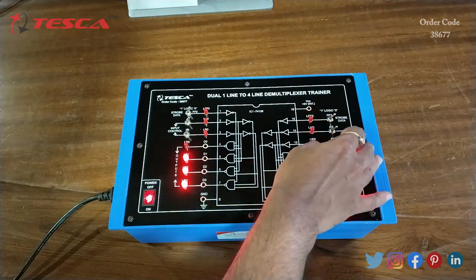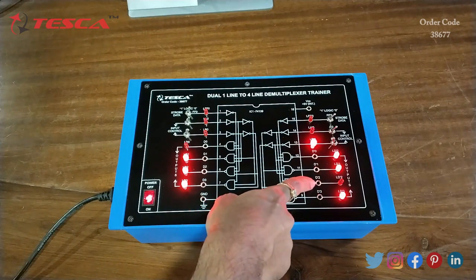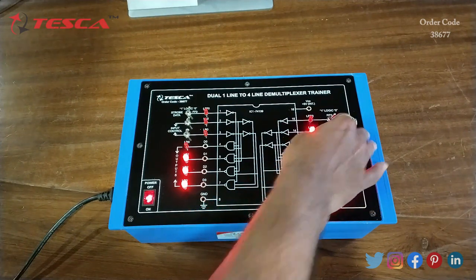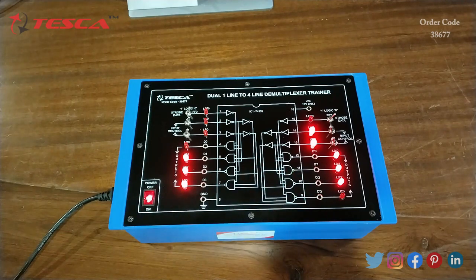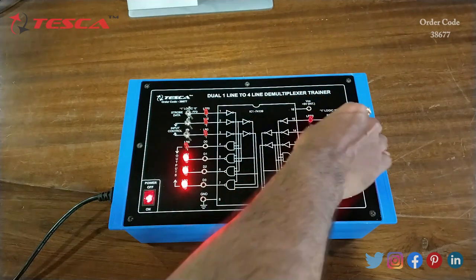When we give high at B0, we are getting low input at D2. When we keep A0 and B0 high, we are getting low output at D3. Similarly you can perform this experiment.